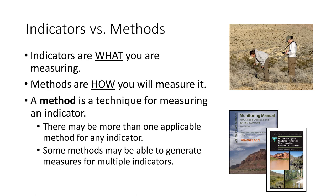Indicators are characteristics of an ecosystem that can be measured or observed, but for any given indicator there may be many different ways of measuring it. A method is a specific technique for measuring an indicator. In other words, the indicator defines what you want to measure, and the method describes how you're going to measure it. For each indicator, you must specify the method to go with it, though there may be more than one appropriate method.